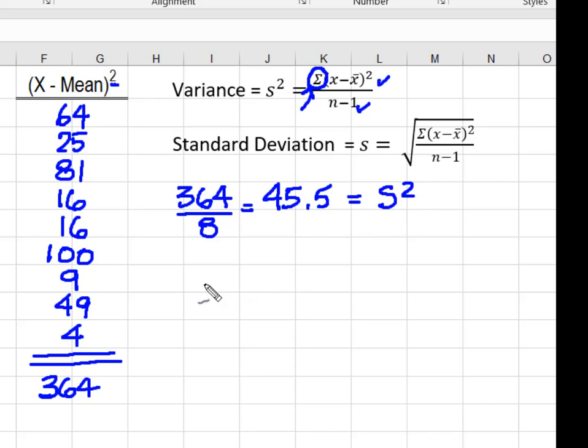And so I need the standard deviation. And I know the standard deviation is simply the square root of the variance. So I'm going to take the square root of 45.5, and I'm going to end up with a standard deviation of 6.745.